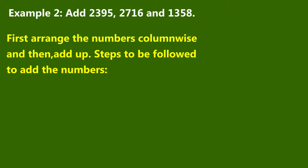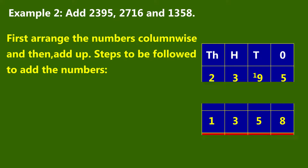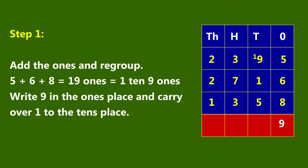Example 2: Add two thousand three hundred and ninety-five, two thousand seven hundred and sixteen, and one thousand three hundred and fifty-eight. First arrange the numbers column-wise and then add up. Step 1: Add the ones and regroup. Five plus six plus eight is equal to nineteen ones — one ten, nine ones. Write nine in the ones place and carry over one to the tens place.